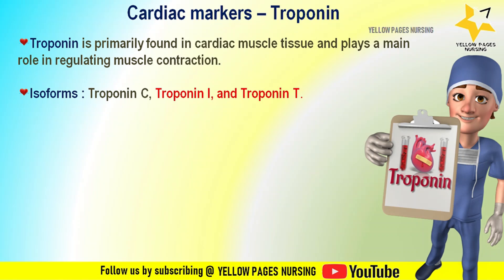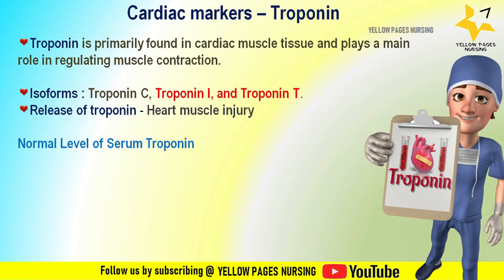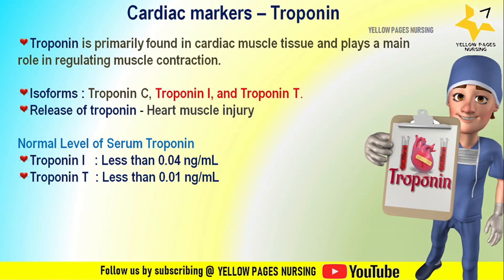Troponin C is present in both skeletal and cardiac muscles, whereas troponin T and troponin I are found only in the myocardium. Normal troponin levels are typically very low or undetectable in healthy individuals. The normal range of troponin I is less than 0.04 nanograms per milliliter, and the normal range of troponin T is typically less than 0.01 nanograms per milliliter.